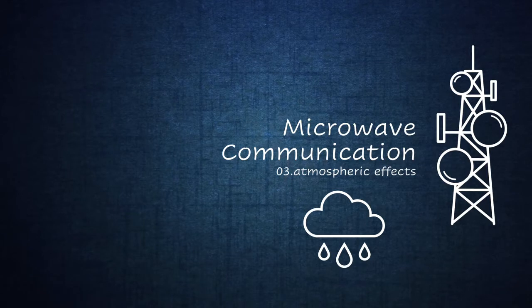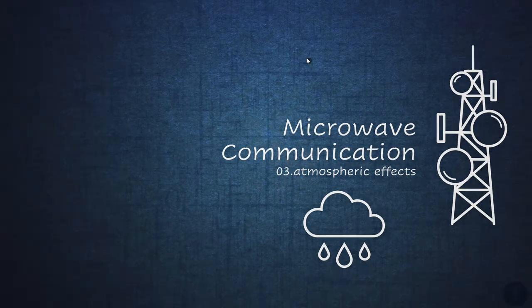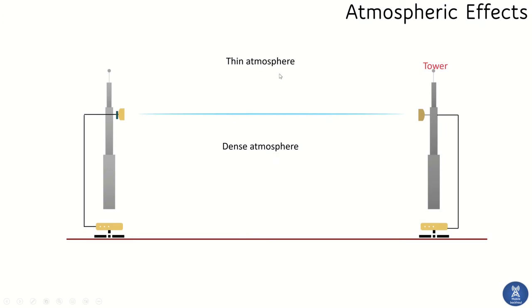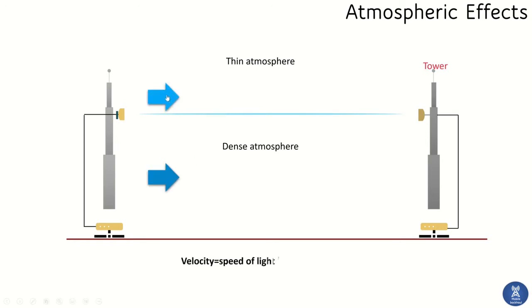In this session we are going to discuss the atmospheric effects on microwave communication. There are two different types of atmosphere shown in this diagram: one is the dense atmosphere and another is the thin atmosphere. Electromagnetic waves travel differently in each — in a thin atmosphere the packet travels very fast, and in a dense atmosphere the packet travels very slowly.